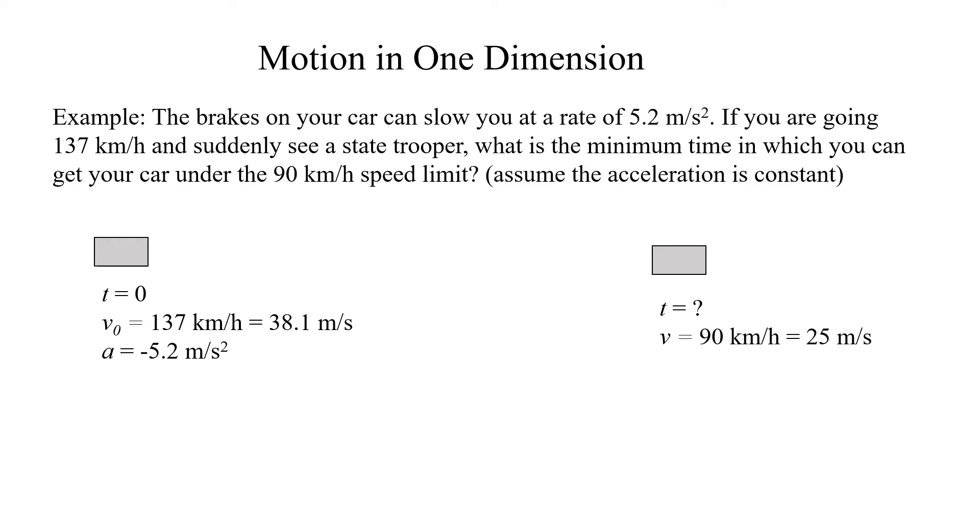All right, so the first thing we do is we draw a diagram. So here is a diagram, and I put in a little block to represent my car at t equals 0. My initial velocity, I wrote 137 kilometers per hour. I'm going to convert that into SI units, so that's 38.1 meters per second. And my acceleration is negative 5.2 meters per second squared. Why is it negative? Well, it's negative because I'm slowing down. Remember, displacement has a direction, velocity has a direction, acceleration has a direction.